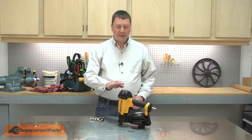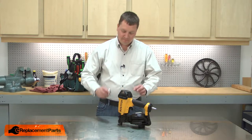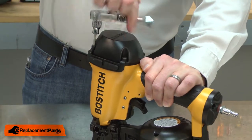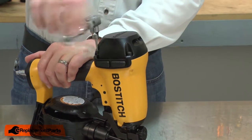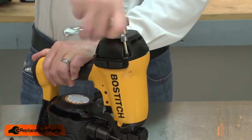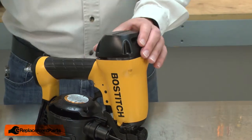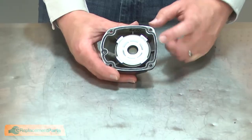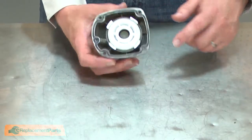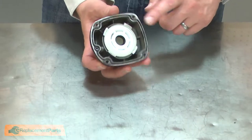I'll begin by removing the nail gun's cap. With the cap removed, now I can remove the head valve. I'll tap it against the table to knock it free.